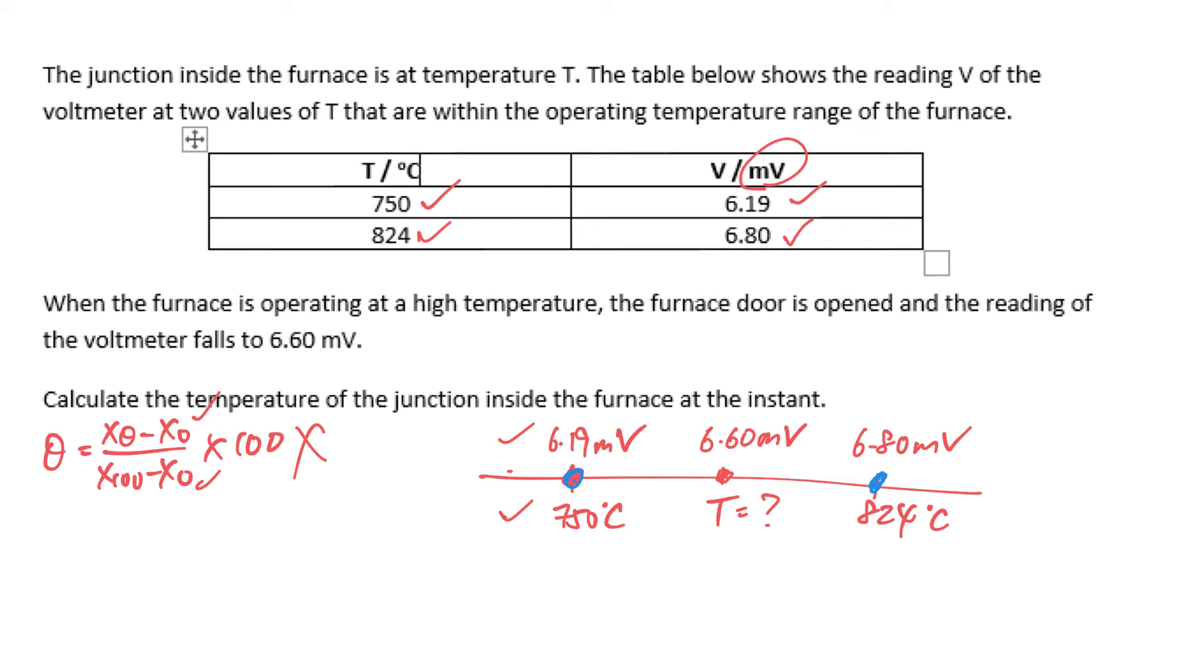So how do I go about doing it? I'll just put the unknown T here: T minus 750 over the voltmeter reading which is 6.60 minus 6.19. That gradient must equal the gradient of these two points, which is 824 minus 750 over 6.80 minus 6.19.